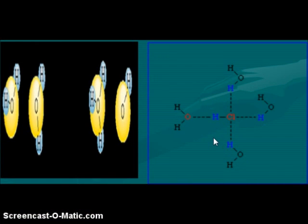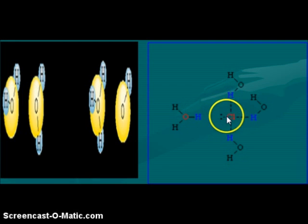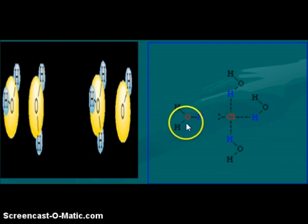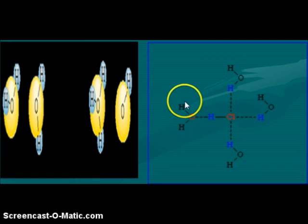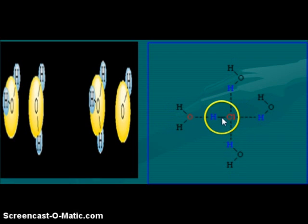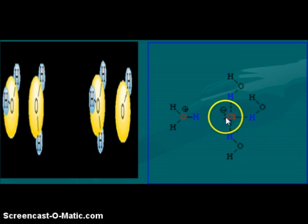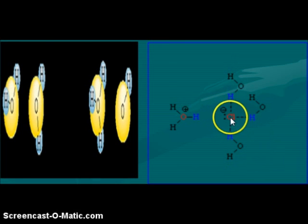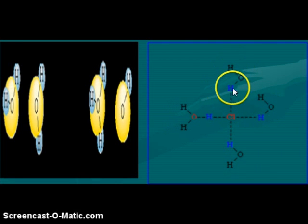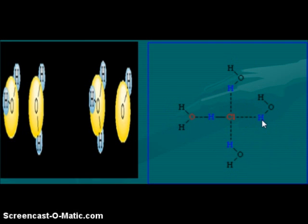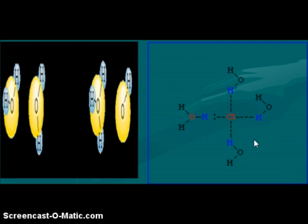Here we see the dissociation of hydrochloric acid. The HCl becomes separated, and the hydrogen attaches onto a water molecule forming a hydronium ion, H3O⁺. Because both electrons in the covalent bond stay with the chlorine, it forms a chloride ion with a negative one charge. The chloride ion will then become surrounded by water molecules, attracting the partially positive hydrogen side of water molecules in a shell of hydration.